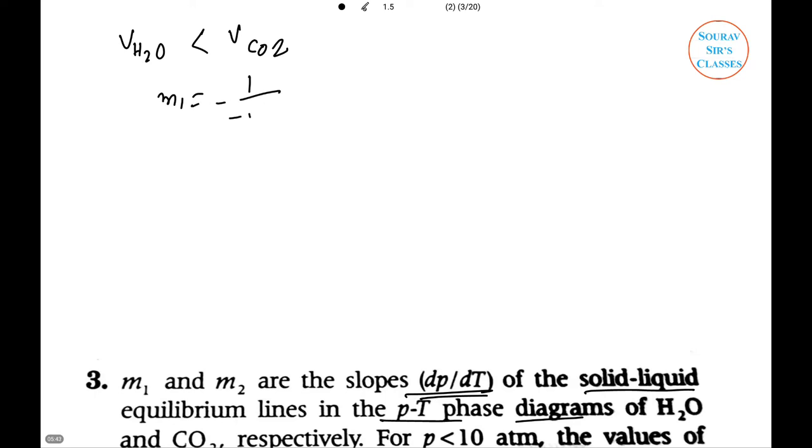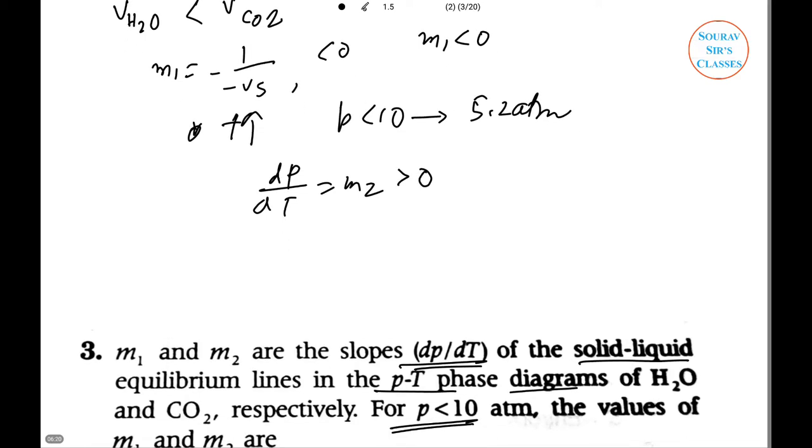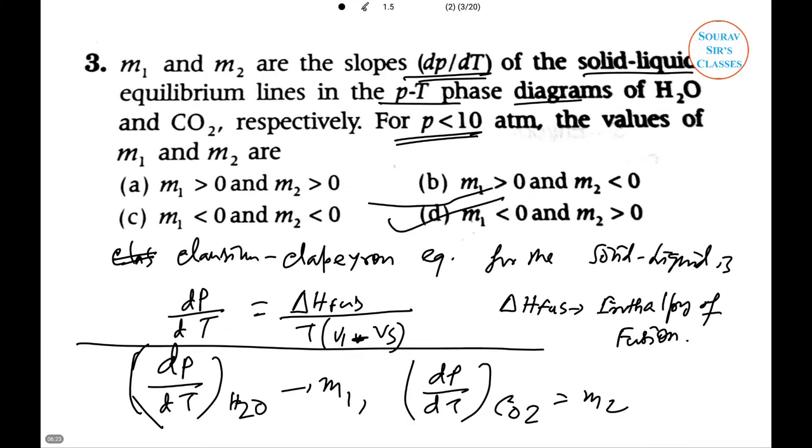Since solid CO2 can exist in equilibrium with its liquid only at very high temperature and pressure, greater than 5.2 atm, from the equation dp/dT equals m2 is positive. Combining these, option D is correct: m1 is negative and m2 is positive.